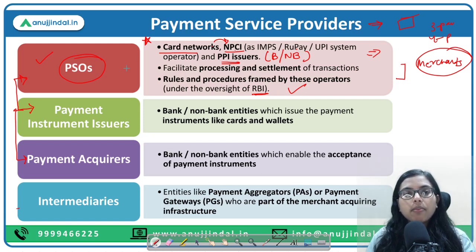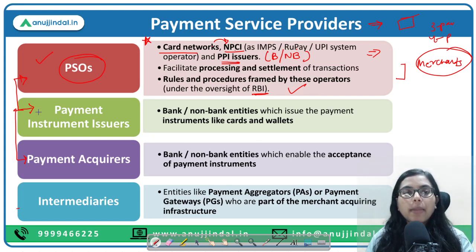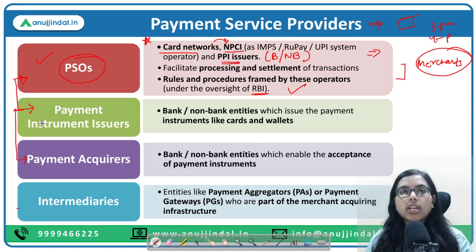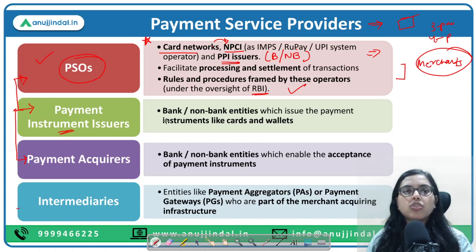After PSOs, we have payment instrument issuers — as the name suggests, these are banks or non-banks that provide you instruments to make payments. These instruments are cards — credit cards, debit cards — or wallets. Cards and wallets are issued by bank or non-bank entities.